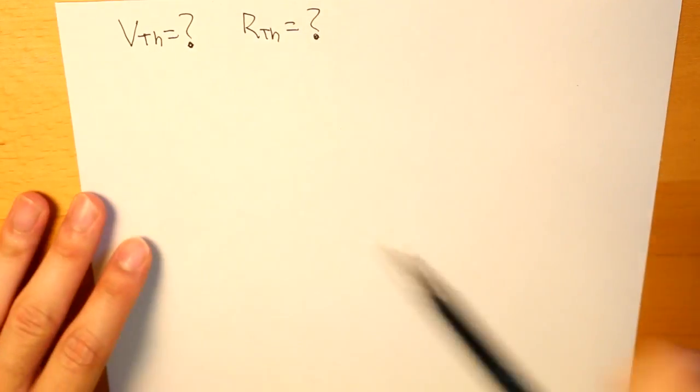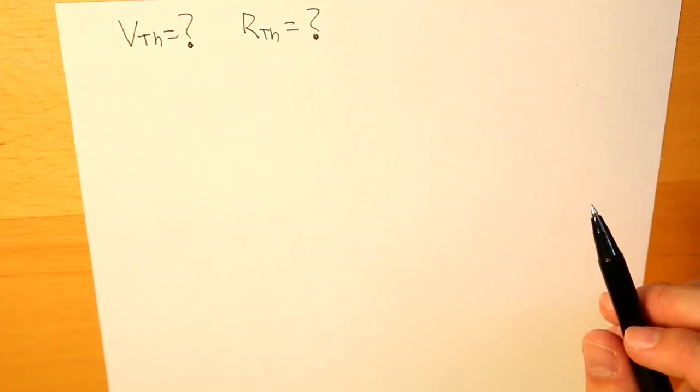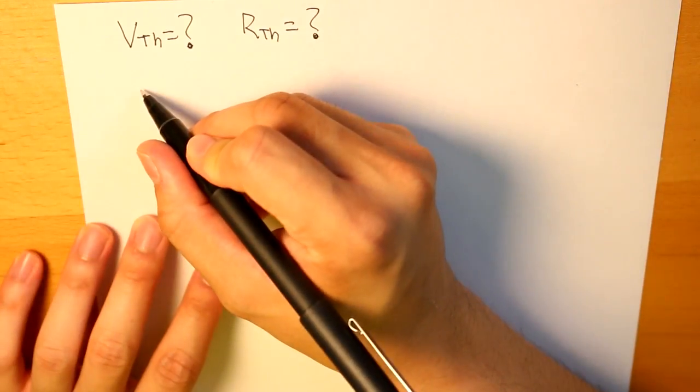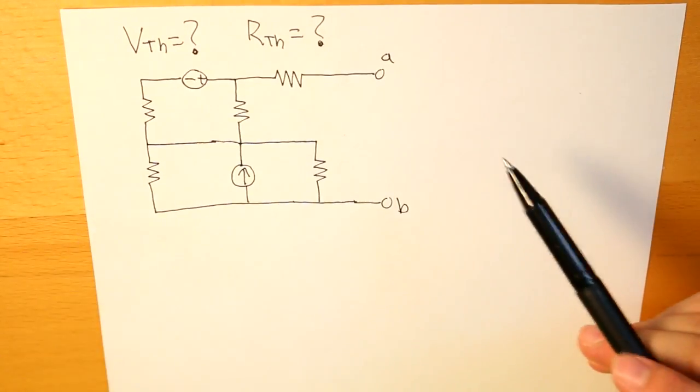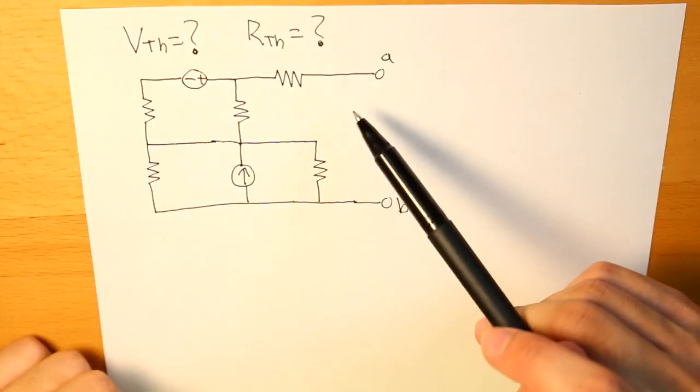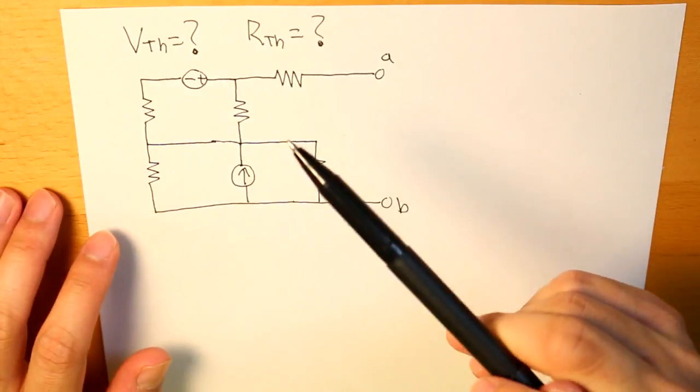Now let's identify how to find RTH. Well it's pretty simple. I'm just going to draw the complex circuit again here. So essentially we want to find what RTH is between these two terminal circuit.